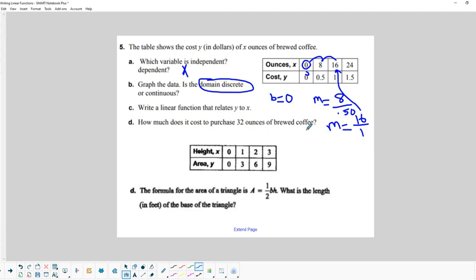Okay. How much does it cost to purchase 32 ounces of brewed coffee? Well, since I found out that it's costing me 16, or each 16 ounces is costing me a dollar, then 32 ounces is double what 16 is. So that would equal $2. And if we had this on a graph, which I don't have a lot of room to make on here, we would be able to look at it on a graph as well. Okay. And it says to graph the data, but we don't have room to graph it in this case.